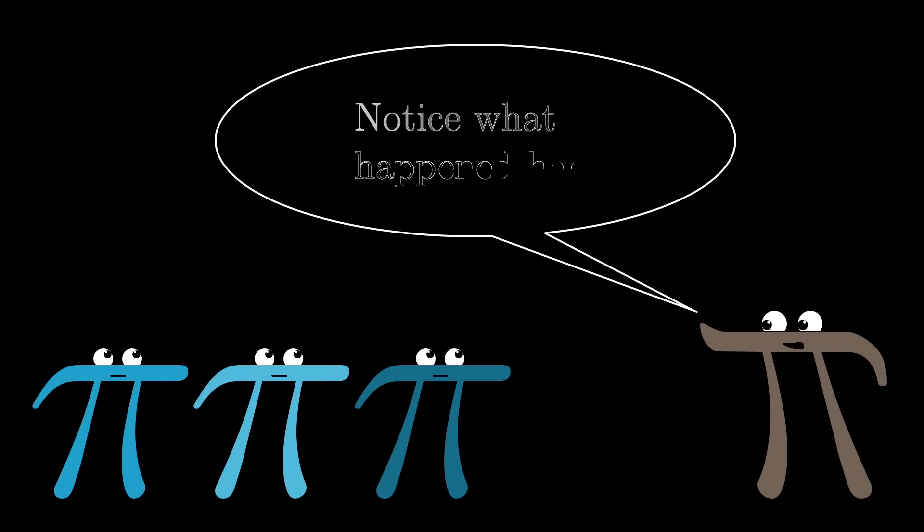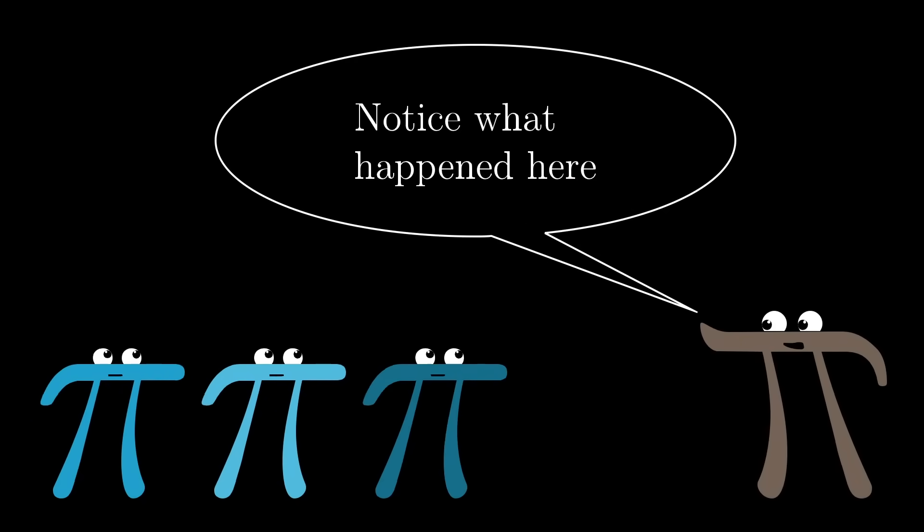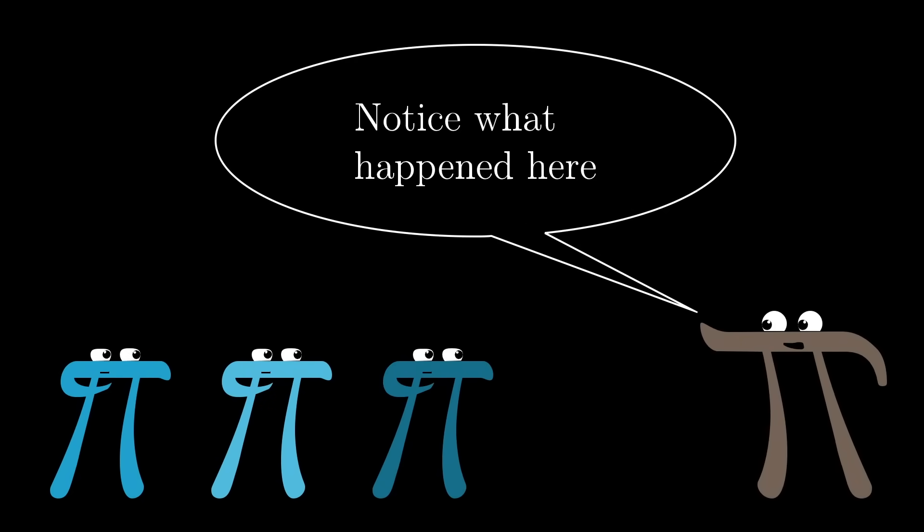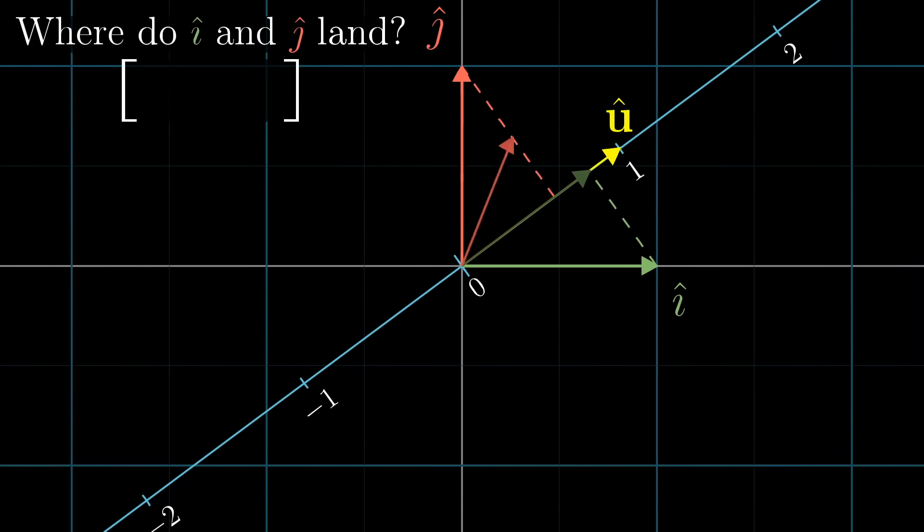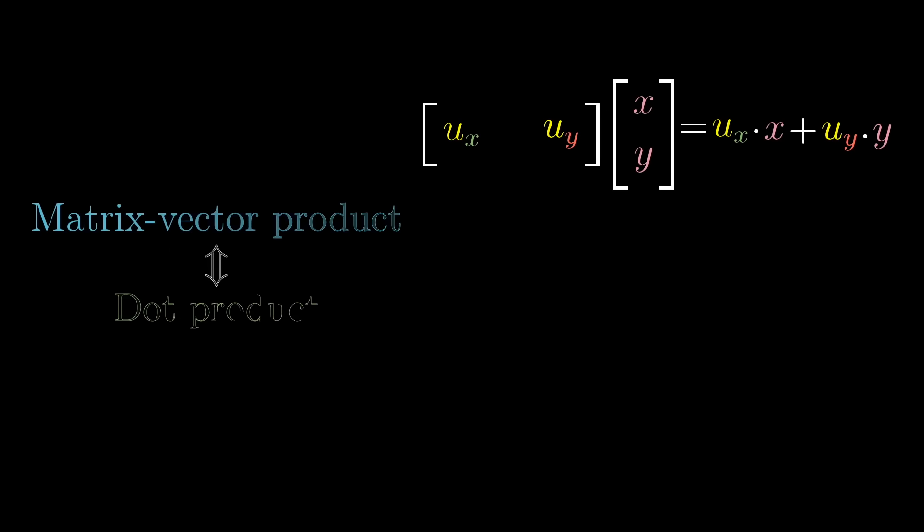Take a moment to think about what happened here. We had a linear transformation from 2D space to the number line, which was not defined in terms of numerical vectors or numerical dot products. It was just defined by projecting space onto a diagonal copy of the number line. But because the transformation is linear, it was necessarily described by some 1 by 2 matrix. And since multiplying a 1 by 2 matrix by a 2D vector is the same as turning that matrix on its side and taking a dot product, this transformation was, inescapably, related to some 2D vector.